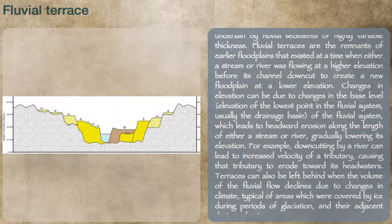Fluvial terraces are the remnants of earlier floodplains that existed at a time when either a stream or river was flowing at a higher elevation, before its channel downcut to create a new floodplain at a lower elevation.